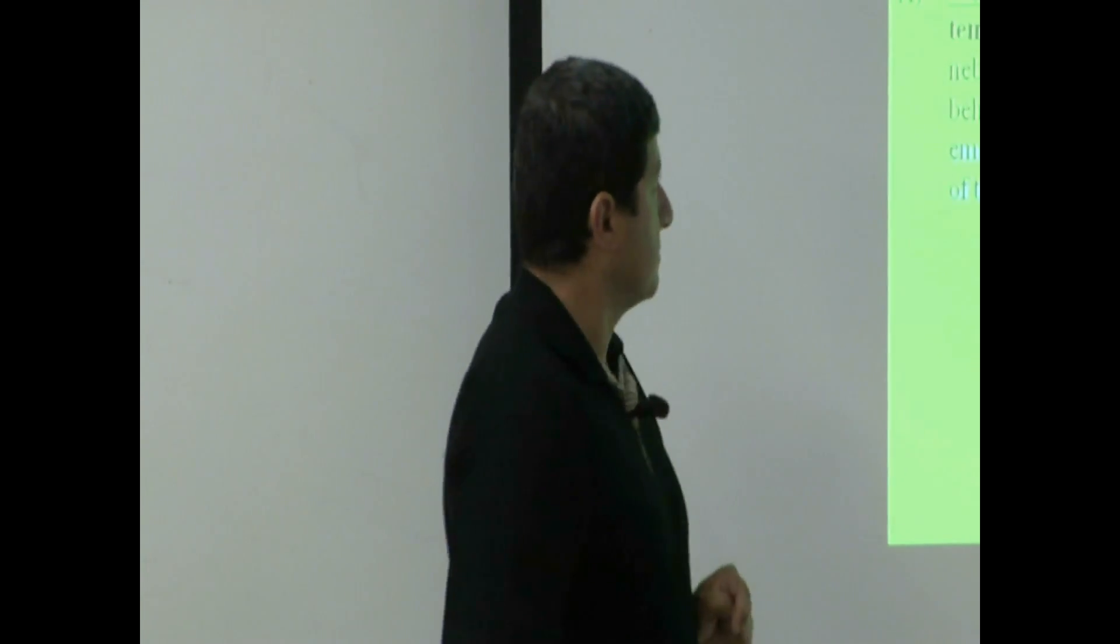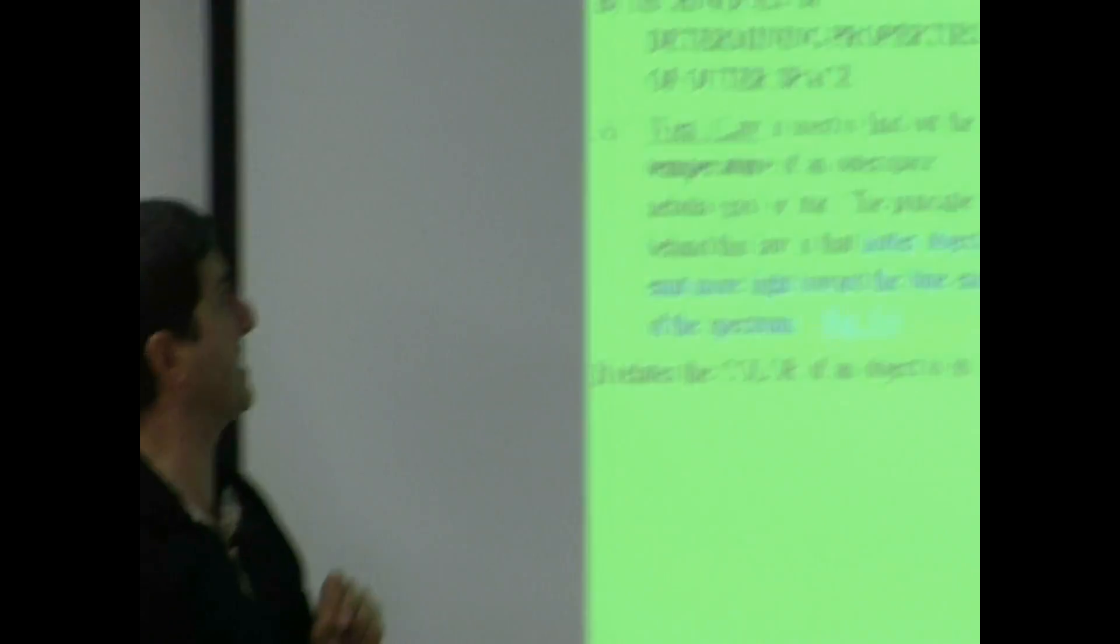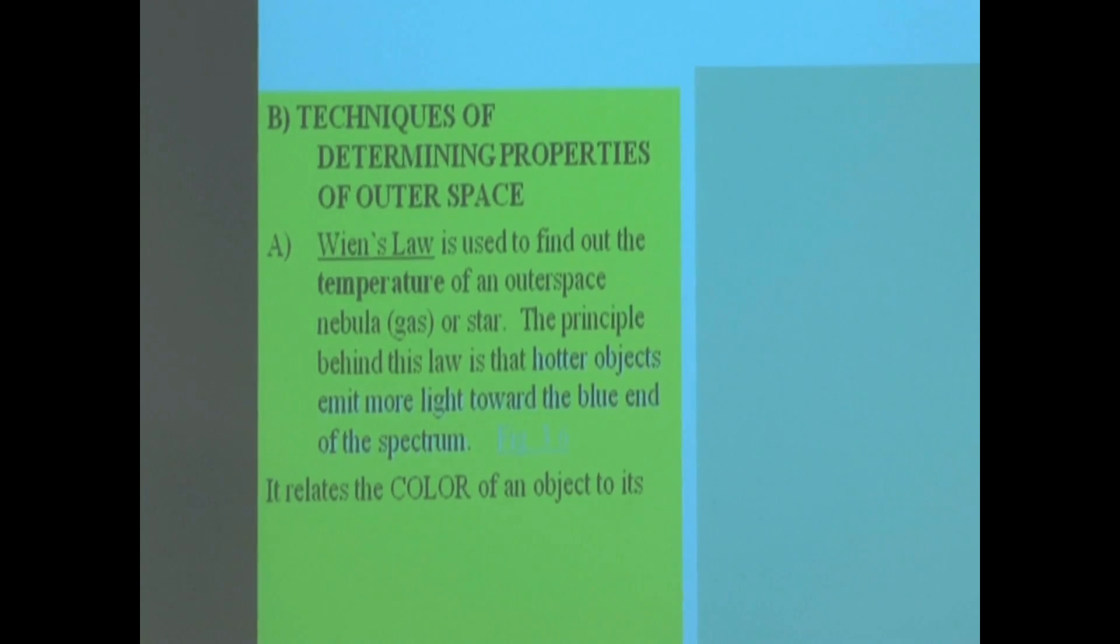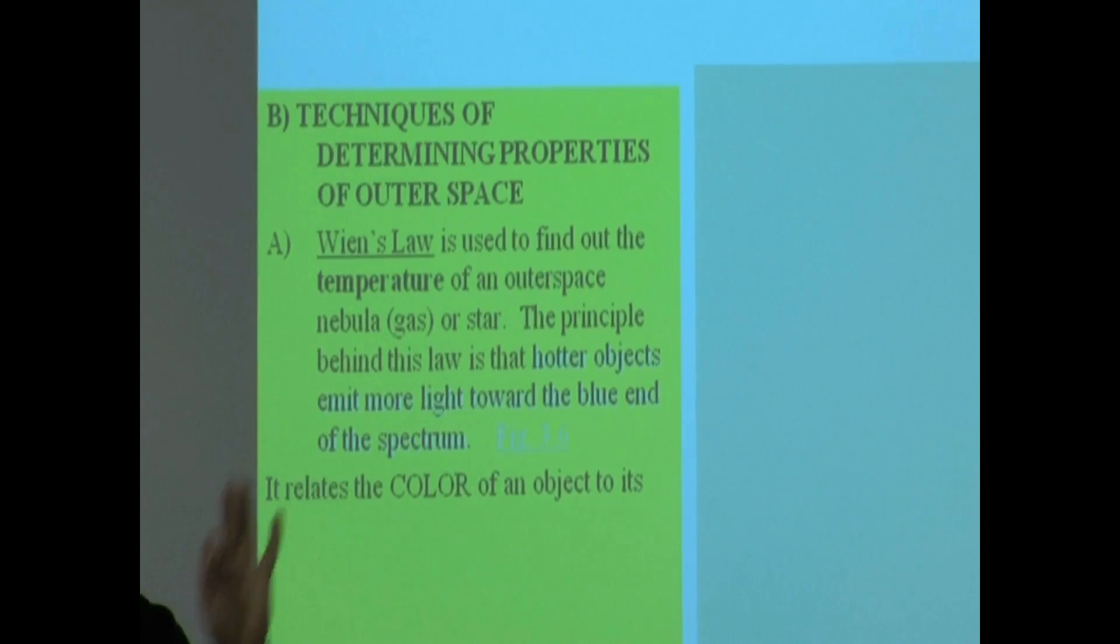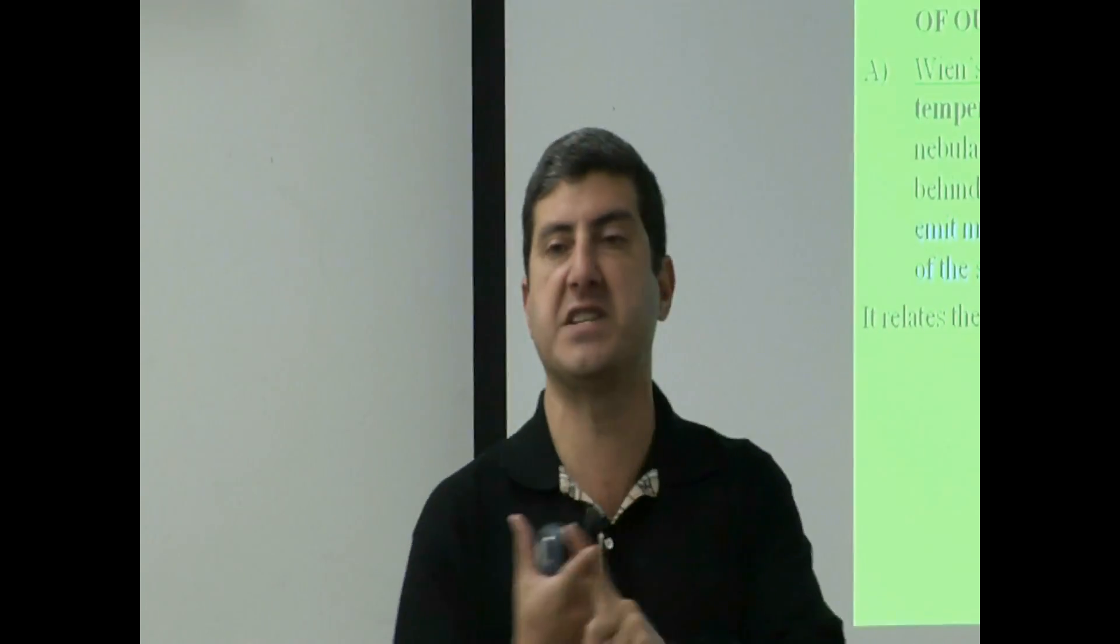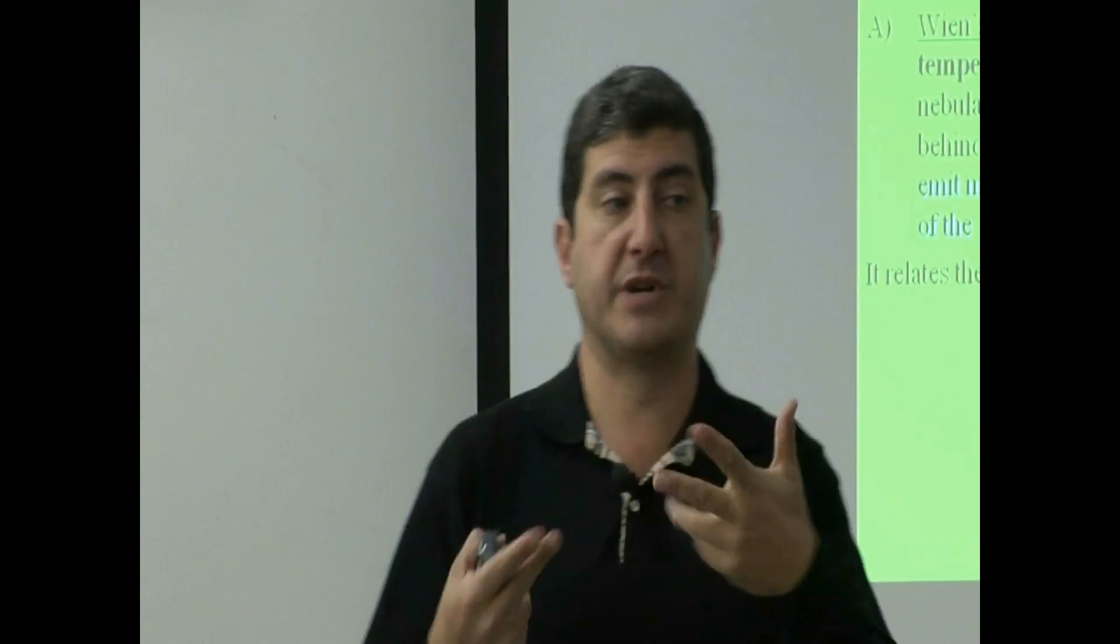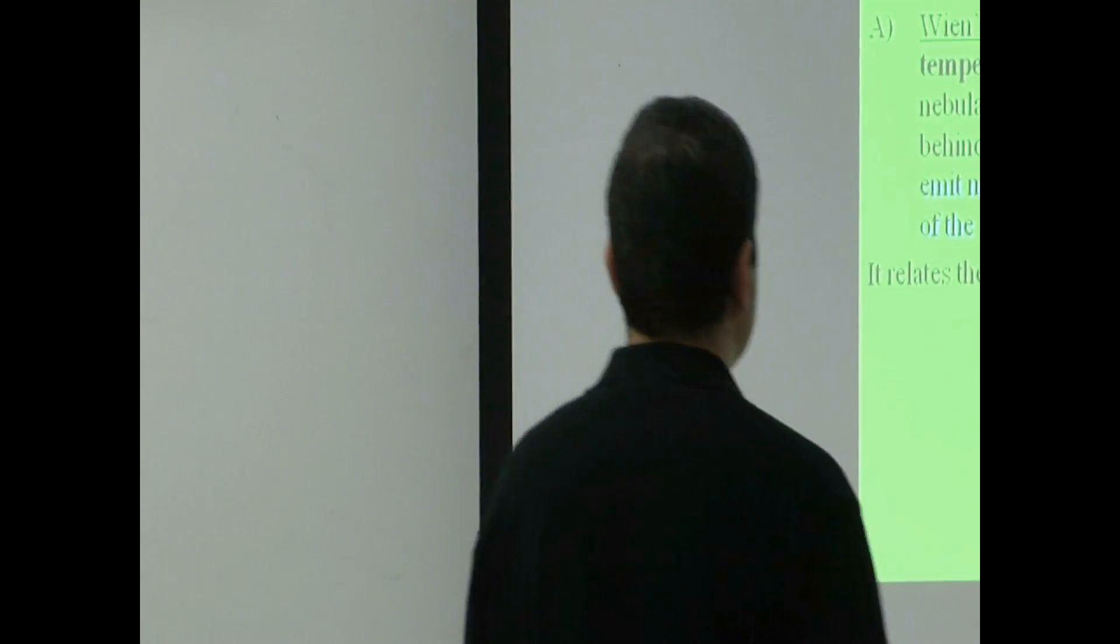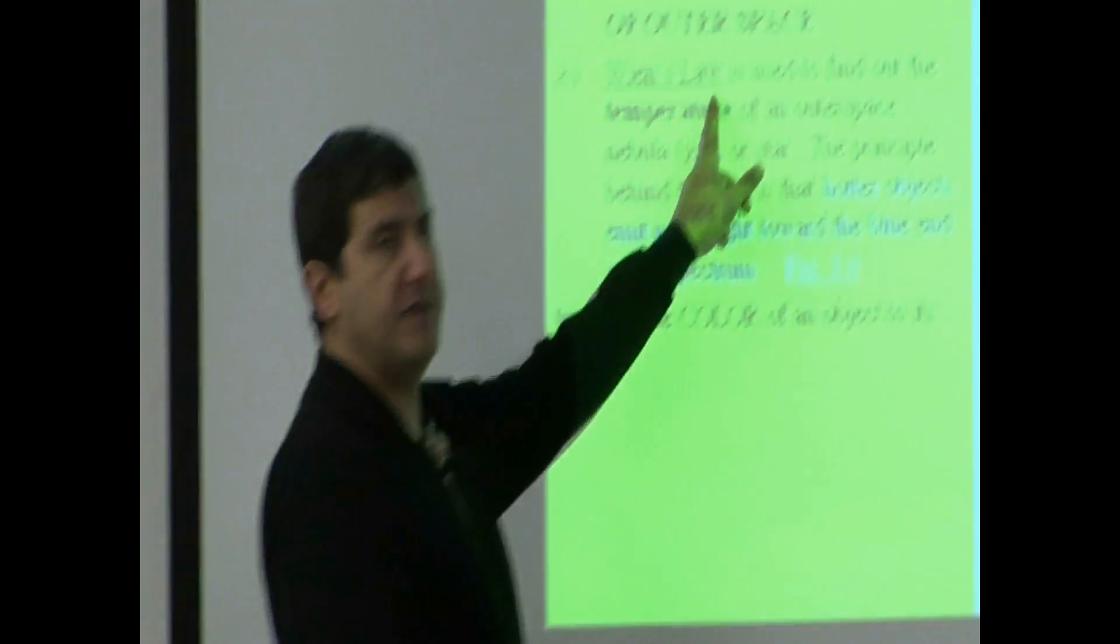Now let's go talk about techniques of determining properties of outer space using the electromagnetic spectrum. So far we established what the electromagnetic spectrum is. The next question is, how can we use the electromagnetic spectrum to find out information about outer space? We use certain principles that we know from physics and chemistry to help us find out information. The first principle is known as Wien's Law.